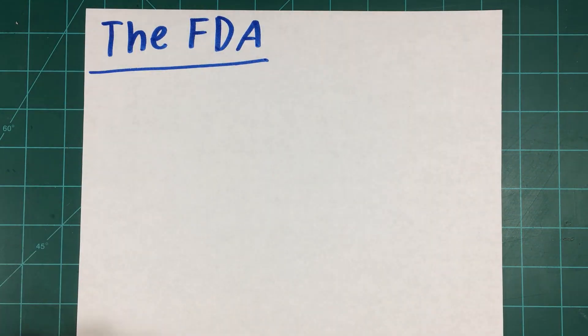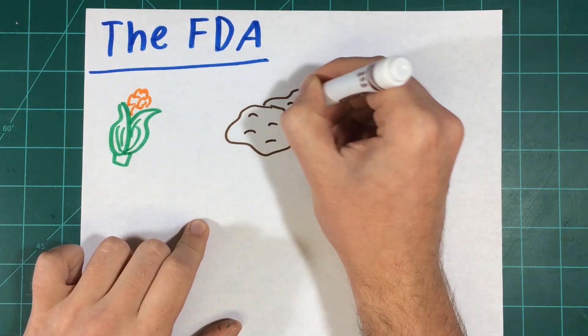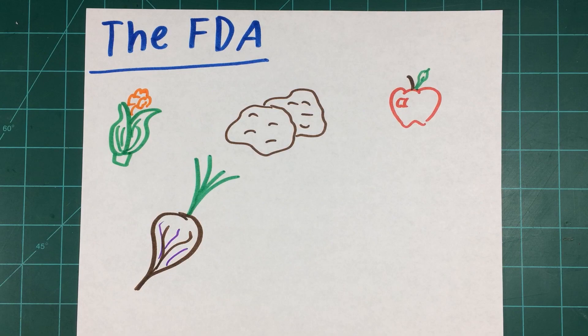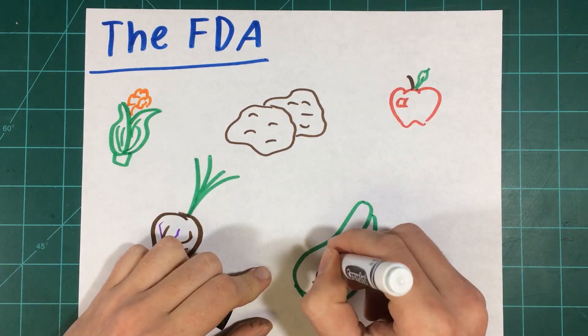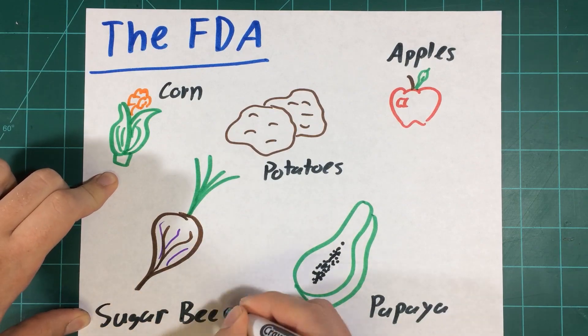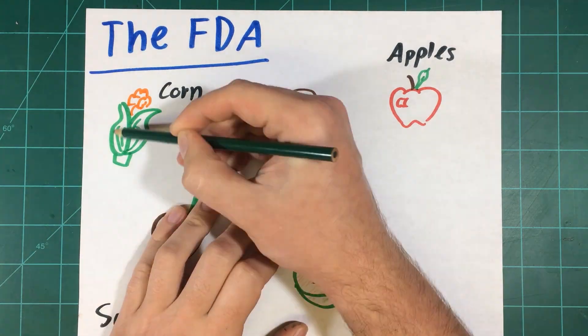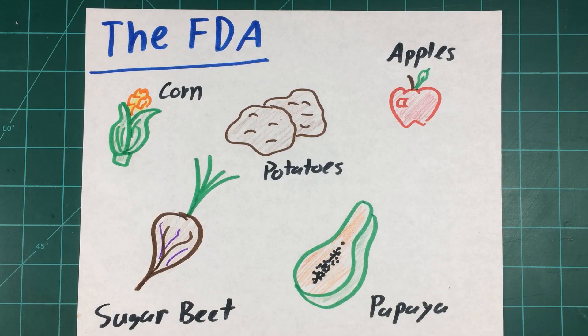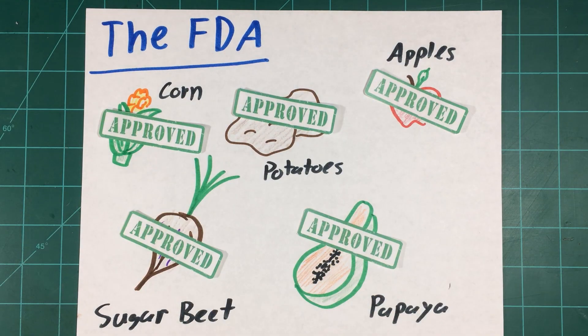The U.S. Food and Drug Administration, or the FDA, evaluates BT crops and other GMO products for human toxicity and possible allergenic effects. This agency has total authority to restrict the marketing and sale of any GMO products if they pose a threat to human health. As of the production of this video, the FDA has never had to exercise its authority on BT foods a single time and have been fully approved for human consumption.